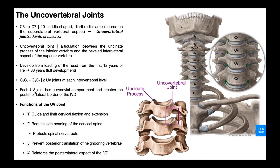The uncovertebral joint does have a synovial compartment, though some sources are hesitant to call them synovial joints because they seem to lack some features. This synovial compartment creates the posterior lateral border of the intervertebral disc. You can see here — this is the vertebral body anteriorly, this is the disc, and these green structures on either side are the UV joints forming that posterior lateral border of the disc.